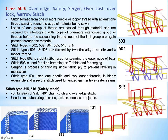This diagram represents the 515 sub-classification of class 500. The two red-colored threads indicate the two needle threads, and the other threads indicate the looper threads. This stitch is basically called a safety stitch and it is a combination of stitch 401 chain stitch and an overhead stitch.